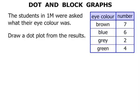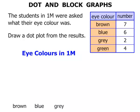Now we need to draw a dot plot from the results. So let's start with a title for the graph: Eye Colours in 1M. The various eye colours are brown, blue, grey, and green. Let's draw a line across the top of those.